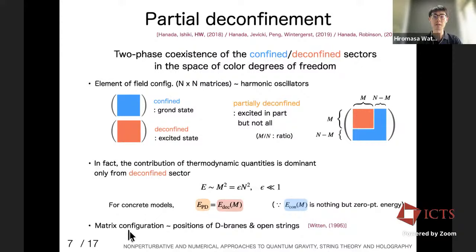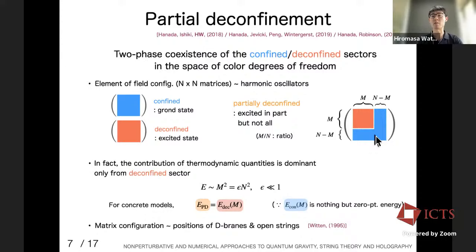Another interesting topic is the relation to the matrix configuration and its geometric interpretation. A famous result is that the diagonal elements of scalar fields in supersymmetric Yang-Mills theory can be translated into positions of D-branes, with interactions written as open strings between them. This naive picture applies naturally to the concept of the partially deconfined phase.